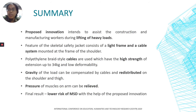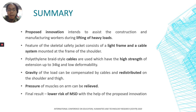In short, this research intends to assist construction and manufacturing workers during lifting of heavy loads. The features of the skeletal safety jacket consist of a light frame and a cable system mounted at the shoulder frame. Polyethylene braid style cables are used, which have a high strength of extension up to 34 kilograms and experience low deformability. Gravity of the load can be compensated by cables and redistributed on the shoulder and thigh, relieving arm muscle pressure and ultimately lowering the risk of MSD. Thank you for your time listening to my presentation.